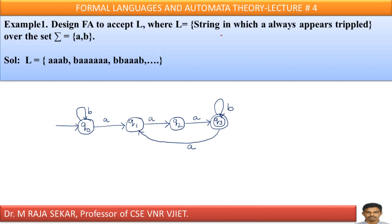Welcome to Rajashekar Classes on Formal Languages and Automata Theory. This is lecture number 4. In this lecture, we will try to understand a few more problems on design of finite automata. We already discussed different applications of finite automata in lecture number 1. These problems are simple and straightforward — if you follow the previous lectures, they are self-explanatory.